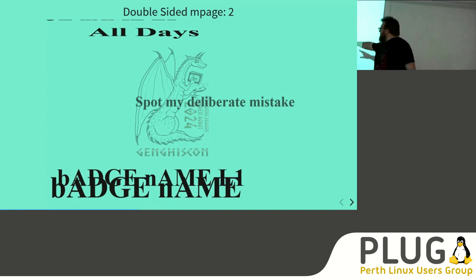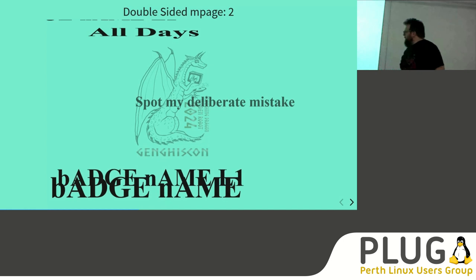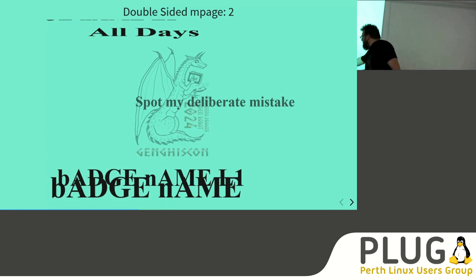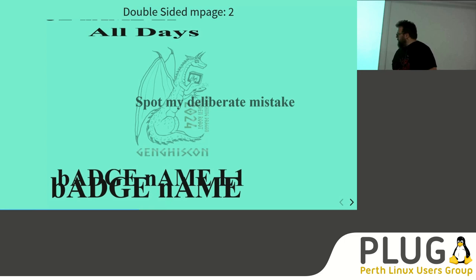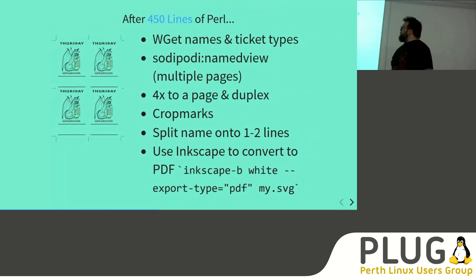There are two badge name fields here. One thing about SVG format is that it doesn't seem to support word wrap. So if you have a long name, we decided to have two badge name fields — badge name line one, and badge name line two — so we can split people's names into two lines manually. If the script is taking this as input, after about 450 lines of Perl, we can grab the names from the web from all the tickets.